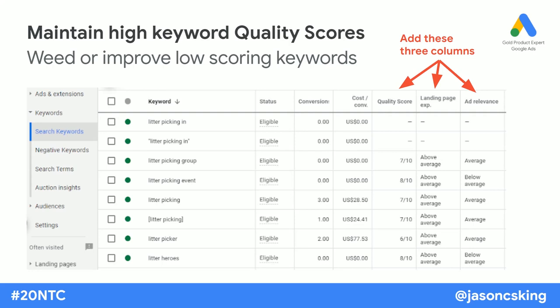The ad grant policies state that you may not have a keyword scoring one or two quality score, but I think that's putting the bar too low. I don't personally allow keyword quality scores of three or four on my accounts. I've even got a couple of accounts where I try to weed out quality scores of five. You want to aim high — you're likely to score nine or ten for your own brand terms, and probably seven or eight for most others. Quality score, landing page experience, and ad relevance are not there by default, but you need them — these are added at the keyword level.